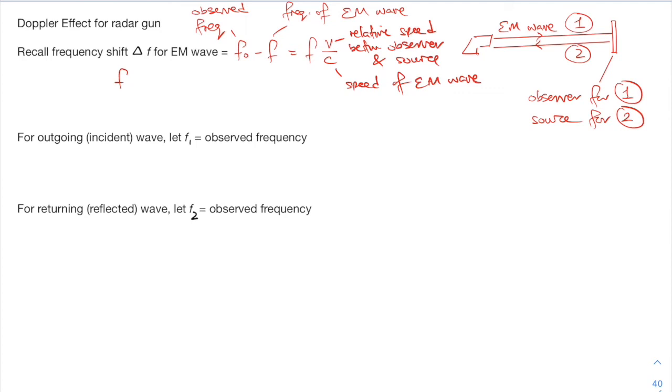Now I'm going to make F0 the subject and bring F across. I get this expression. And I factorize F, I get this expression. So right now I'm going to derive the total frequency shift for a radar gun.